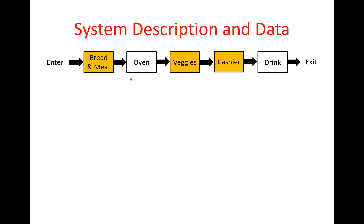Then customers go to the third stage, which is the veggies station, where they add lettuce, tomatoes, and other vegetables and condiments to their sandwich. Once the sandwich is ready, customers pay at the cash register. After payment is complete, the cashier puts the sandwich in a bag, the customers go to the drink machine to get their drink, and then they leave the system.